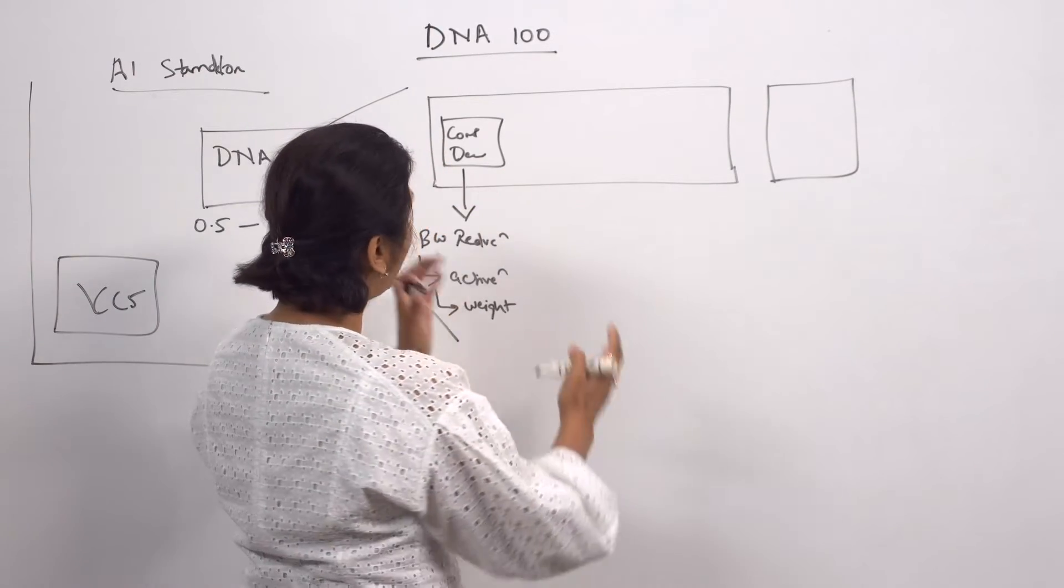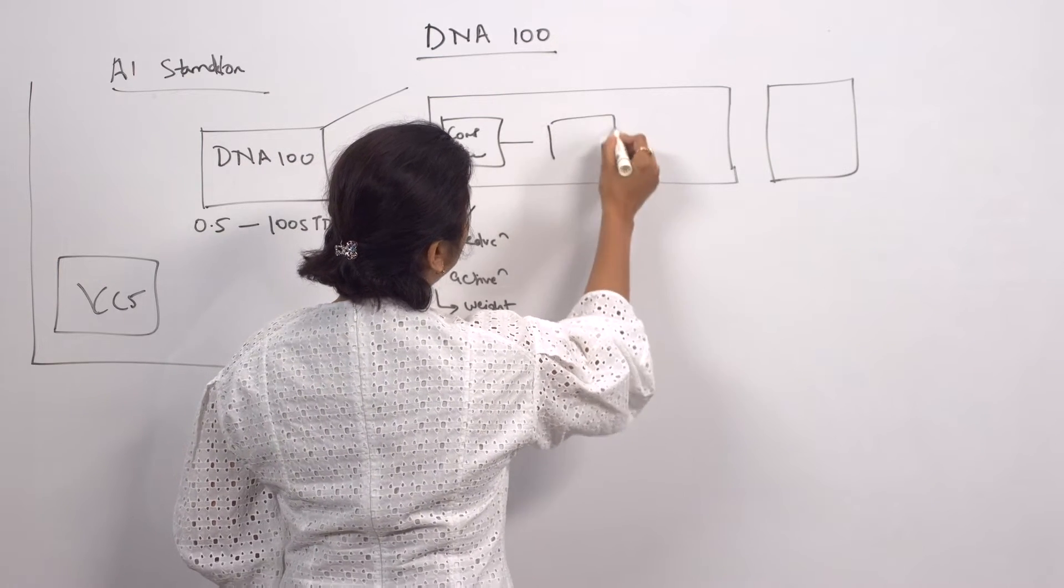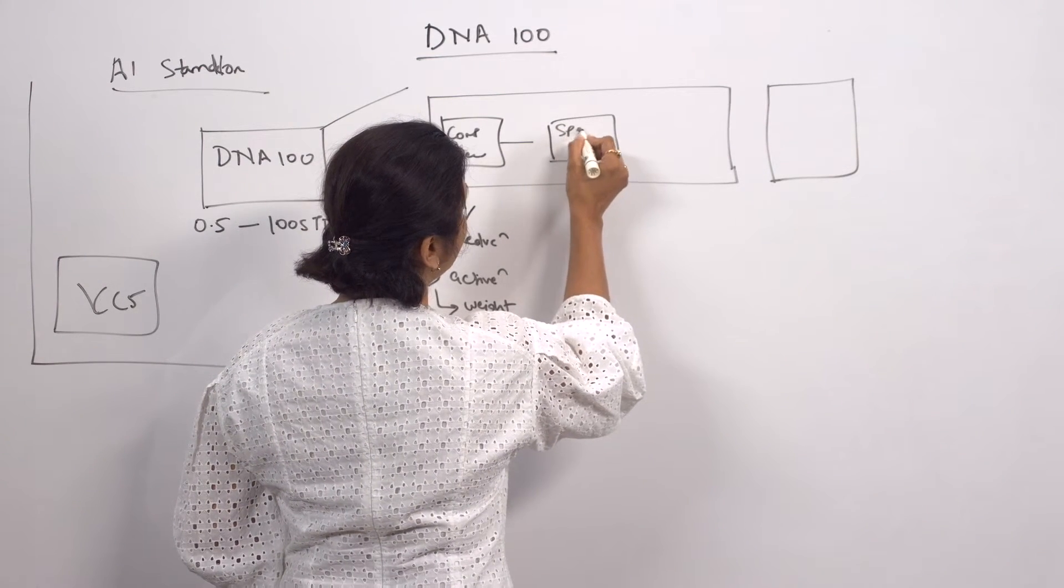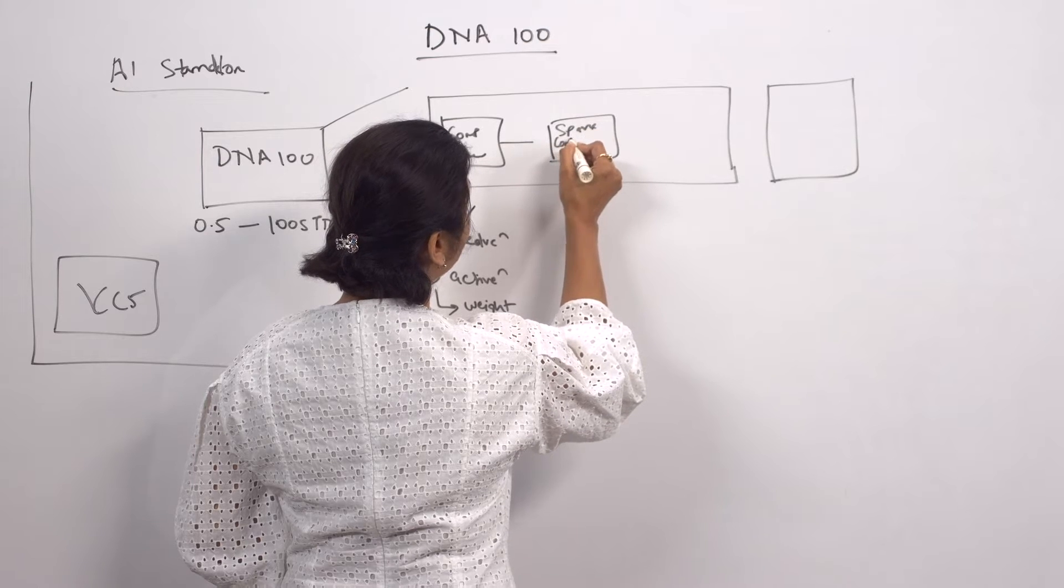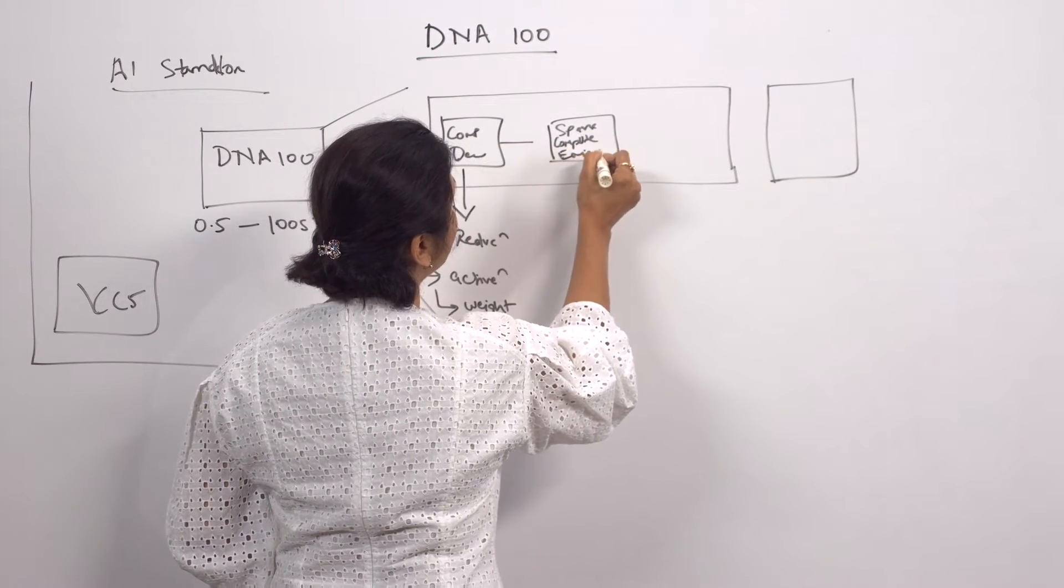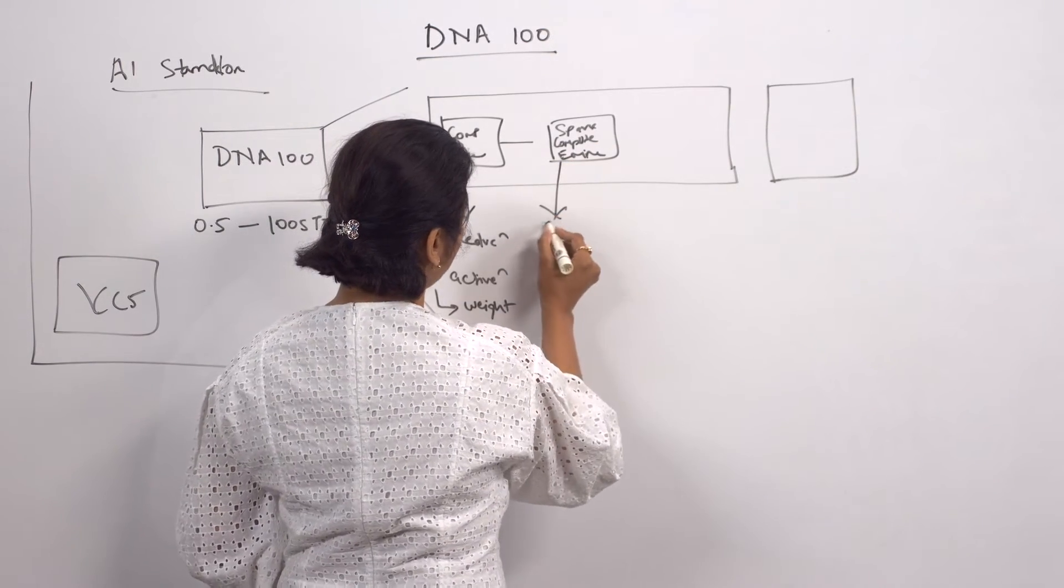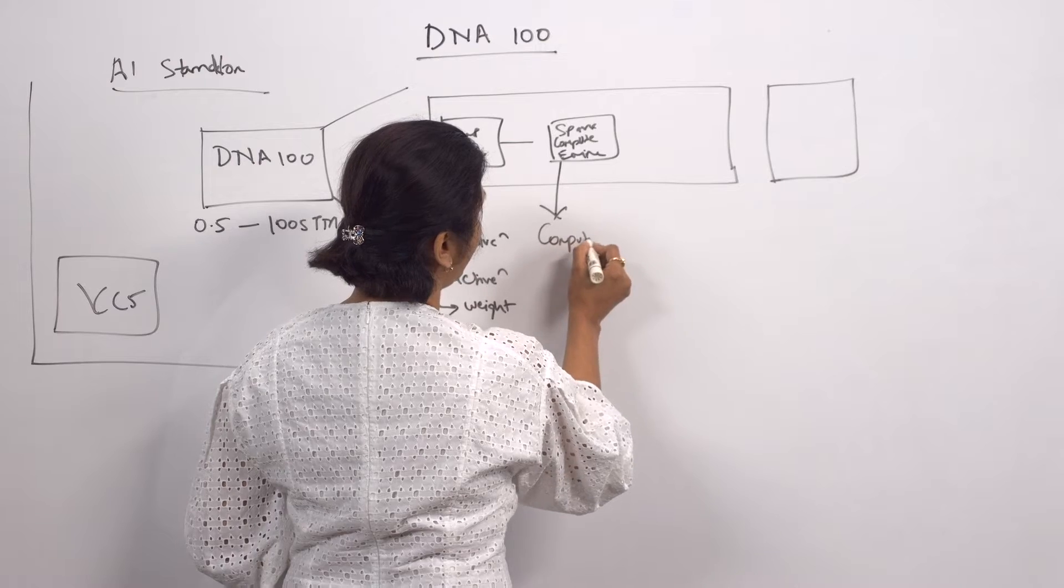Once the bandwidth reduction is taken care of and we have decompressed it, following a couple of blocks where it leads to is the sparse compute engine. Sparse compute engine is another place where the sparsity is getting taken advantage of, but here it's getting taken advantage in the compute area.